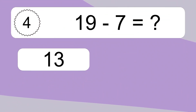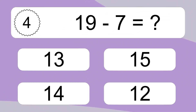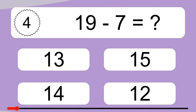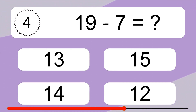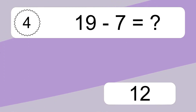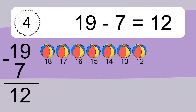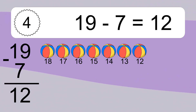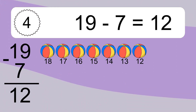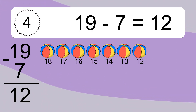19 minus 7 equals what? 19 minus 7 equals 12. Let's count it: 18, 17, 16, 15, 14, 13, 12.